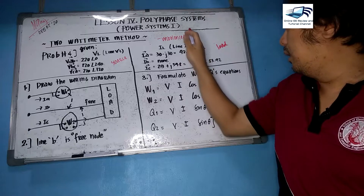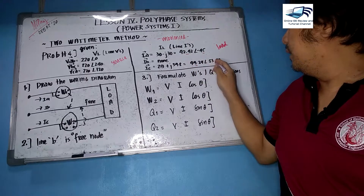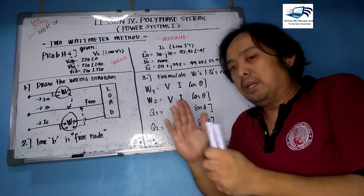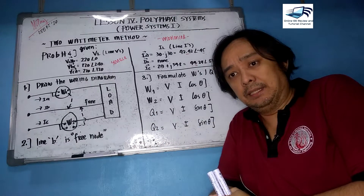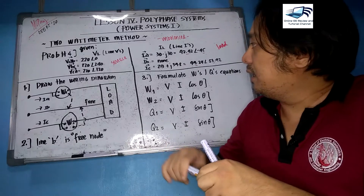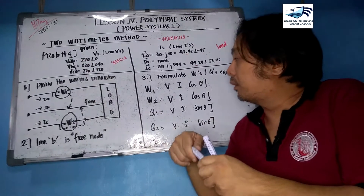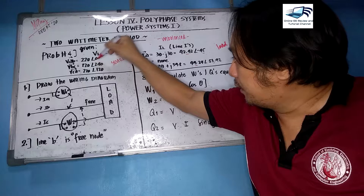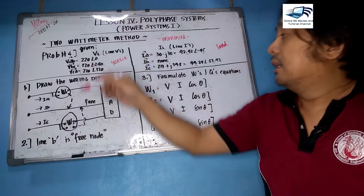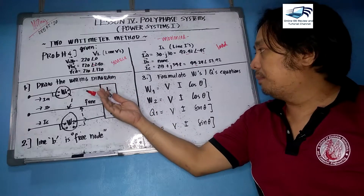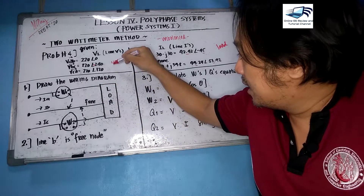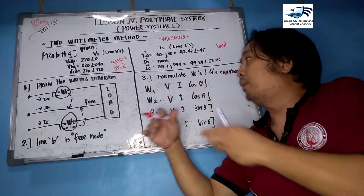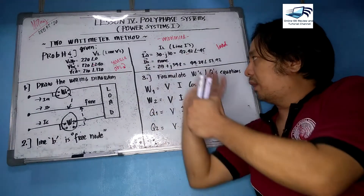They are not equal in terms of magnitude and definitely they are not 120° apart. Let us go to the source to see the sequence. Vab is 220∠0°, Vbc is 220∠240°, and Vca is equal to 120°. If you have positive 240°, it means your line voltage at B is in the second quadrant, so this is an ABC clockwise direction — an ABC or positive sequence.